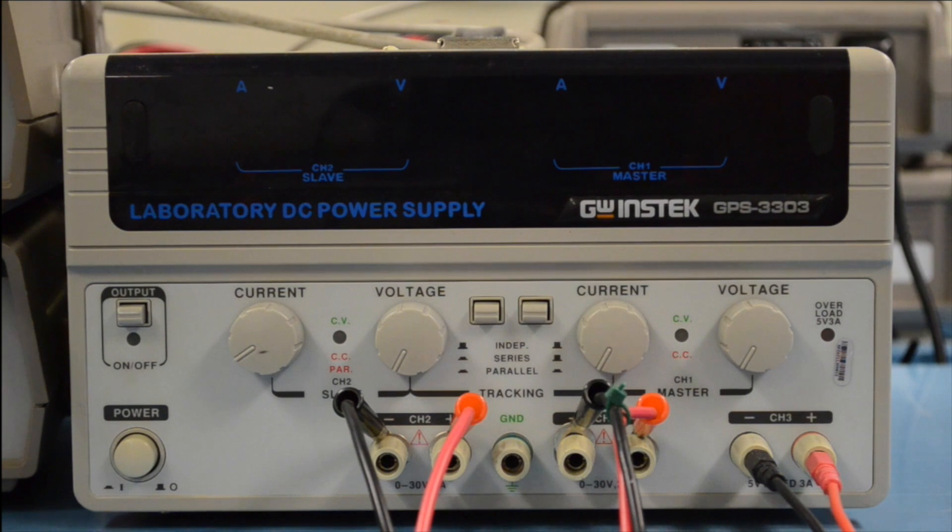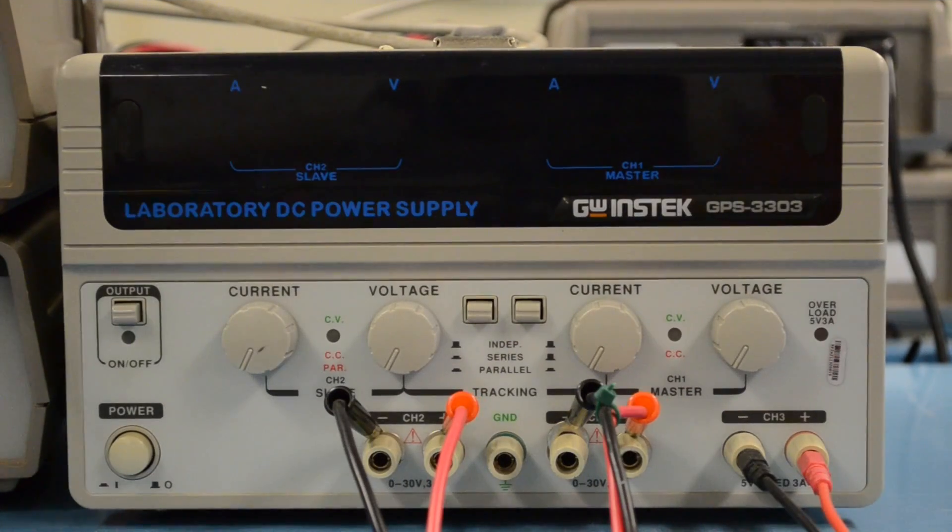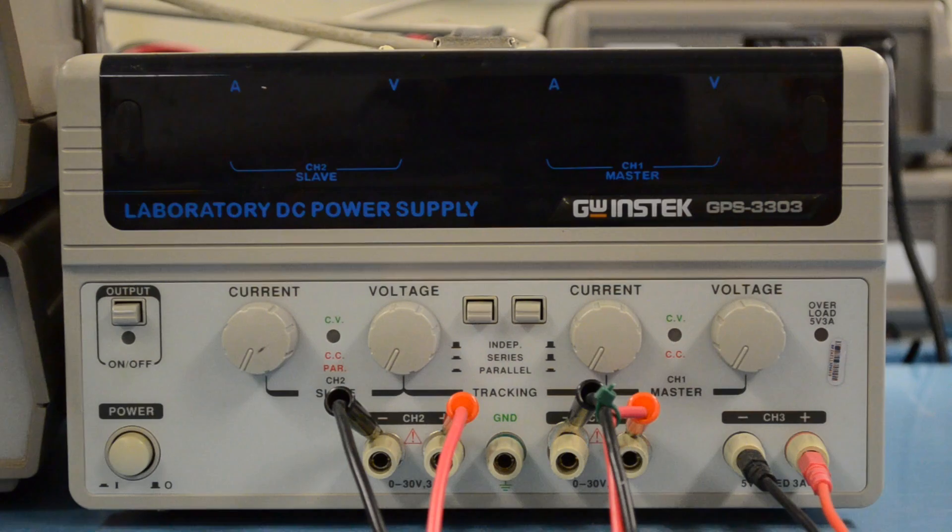The power supply has three output channels. Channel 1 and 2 allow the user to set the output voltage and current limit. Channel 3 is set at a fixed output of 5 volts, with the current limited to 3 amps. To see how this works, let's first turn the power supply on.